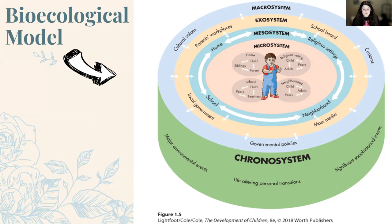So the microsystem is our first level. As you can see, it's the first peach-colored circle around the child — it's the closest to the child. The word microsystem: we break that down into roots. Micro means small, like microscope or microorganism. It makes sense because it's the smallest, most direct system that's going to impact the child. What's included in the microsystem is their direct home setting — siblings, parents, the child themselves — as well as religious settings like churches, schools, and the neighborhood. These are face-to-face settings they're interacting with daily or regularly.